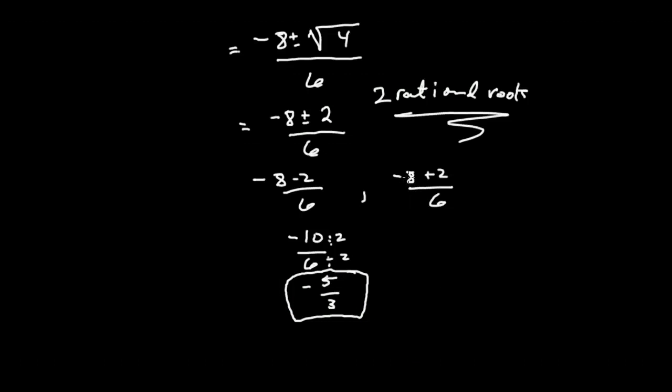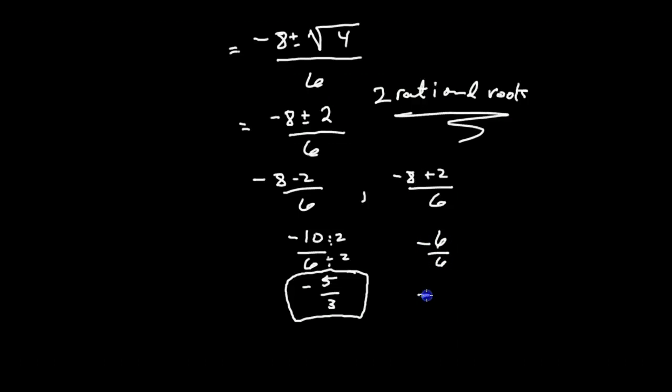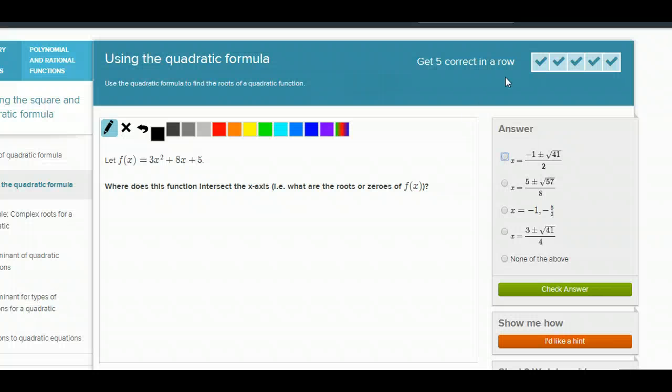My second rational root will be negative 8 plus 2, or negative 6 over 6, which simplifies to a negative 1. So those are my two rational roots.